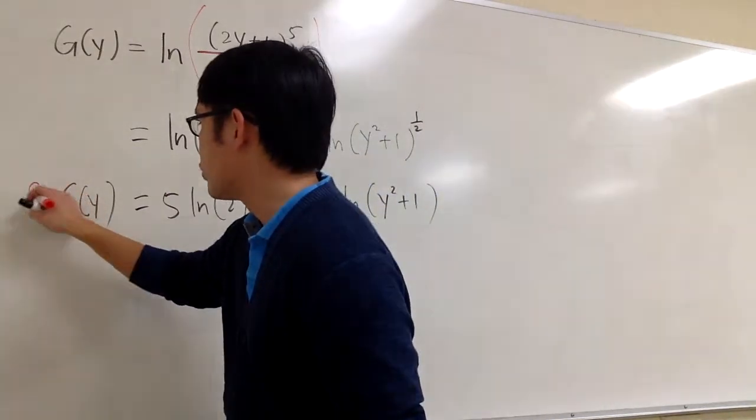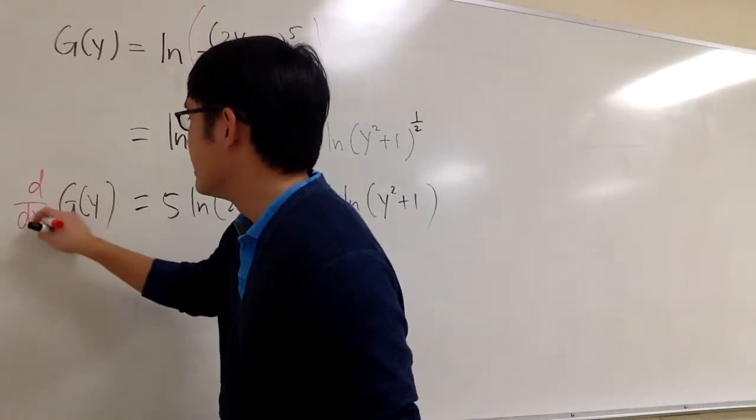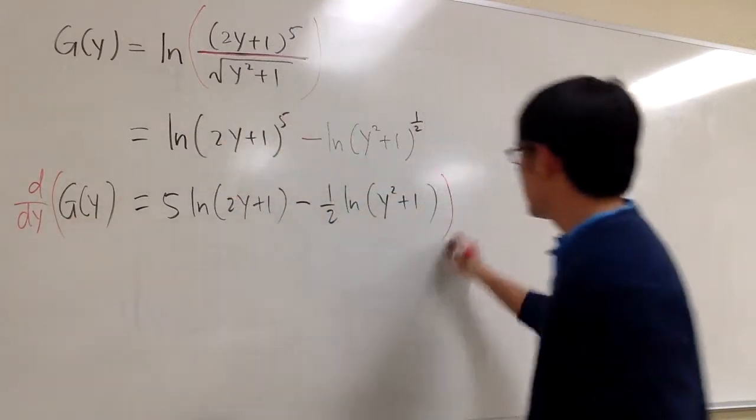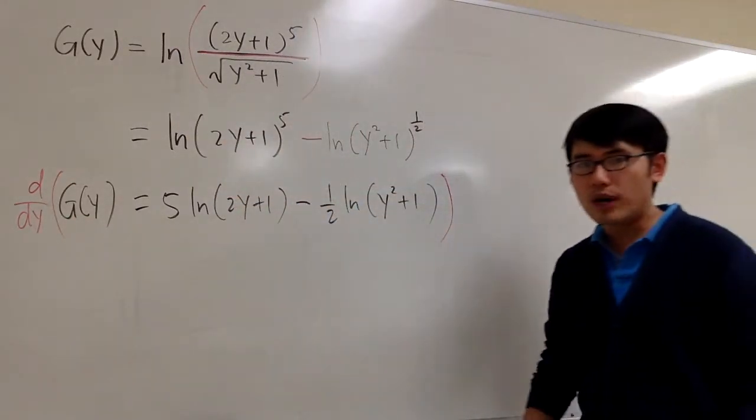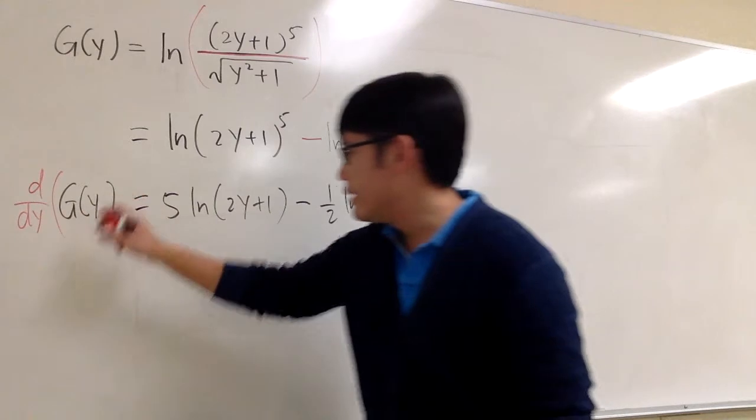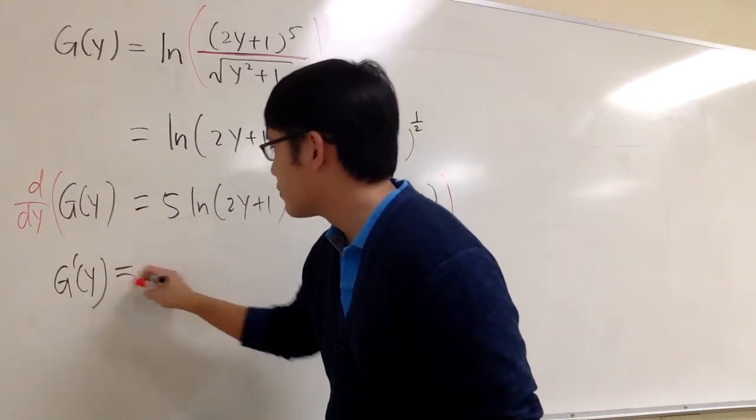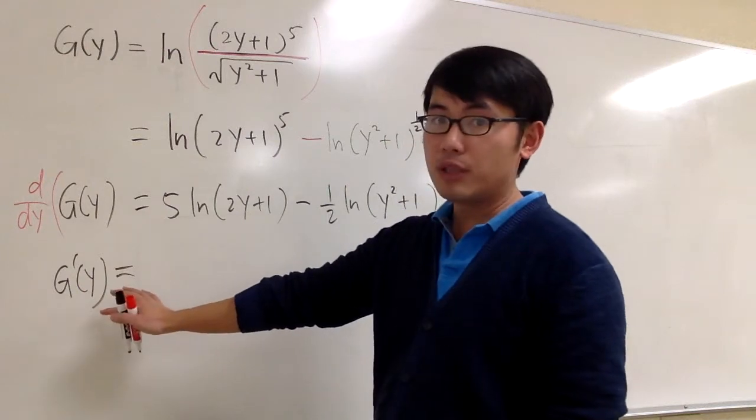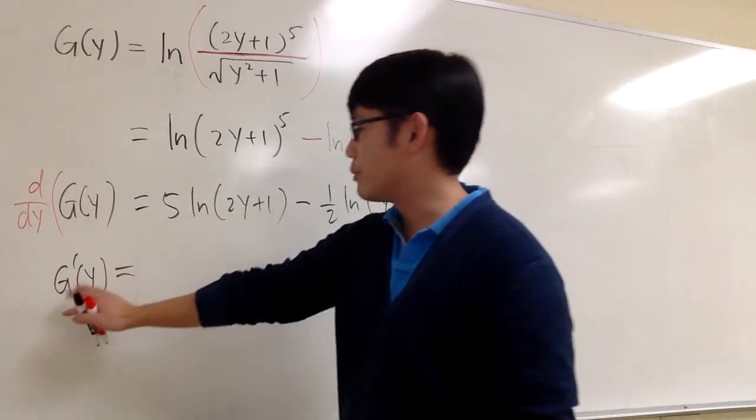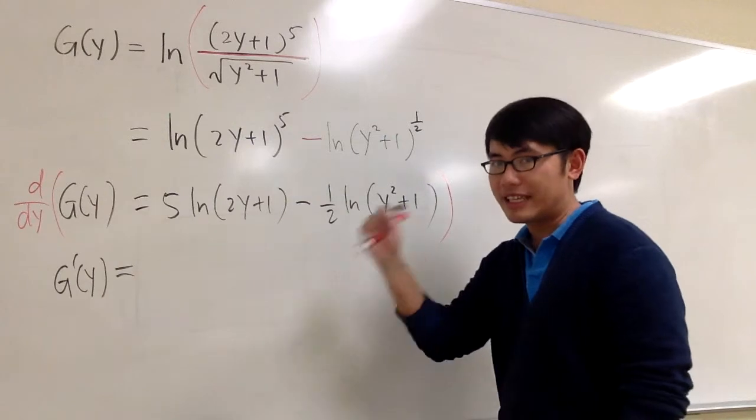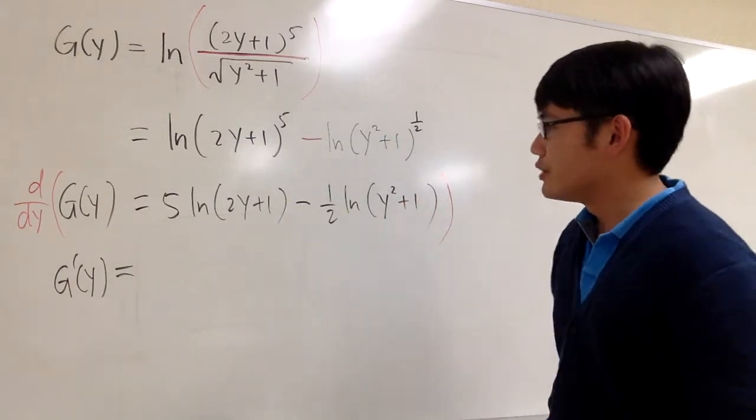So when we are taking the derivative, let me put this down as d dy. We are going to get g prime of y. And do not multiply by dy dx. The y is just like the x in other situations.